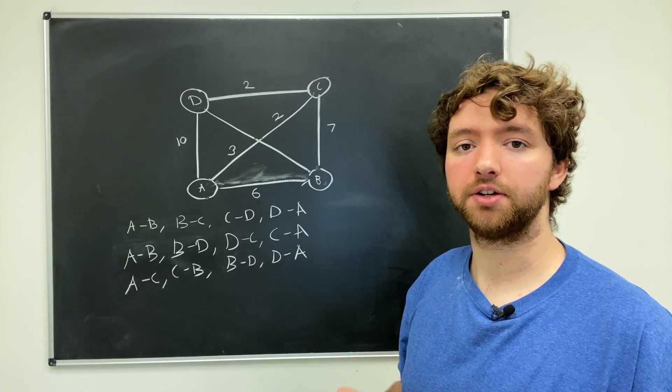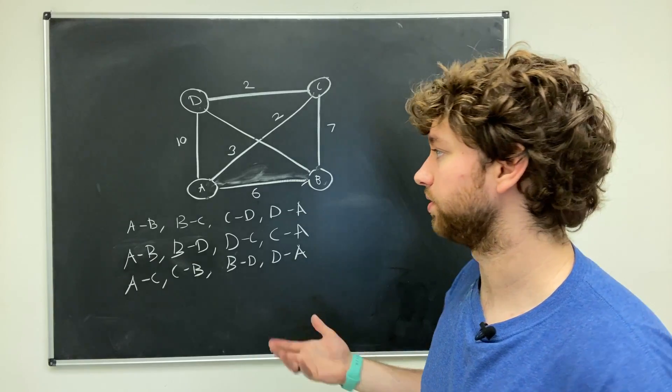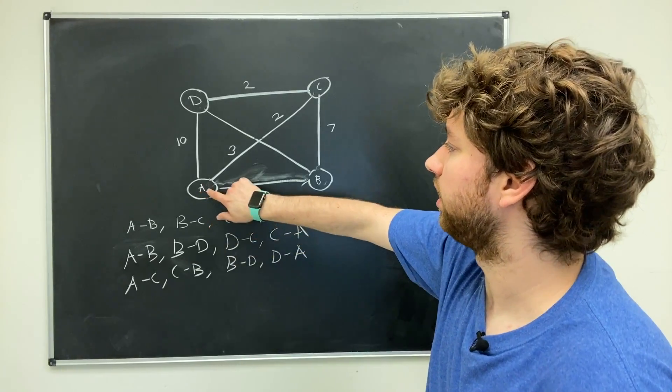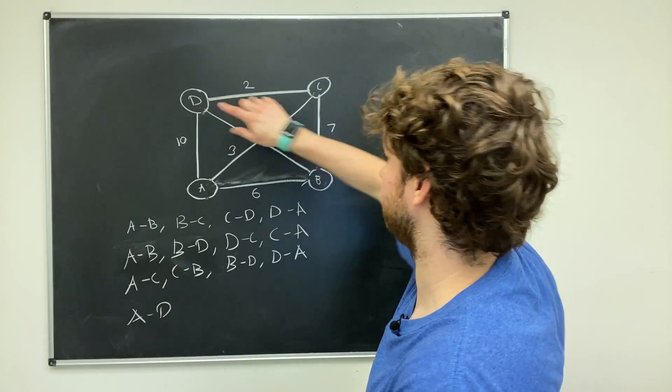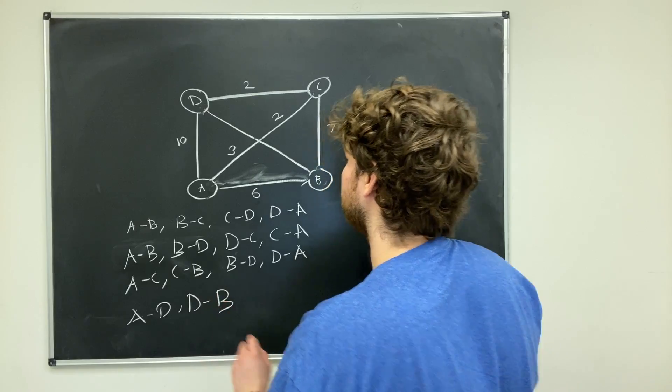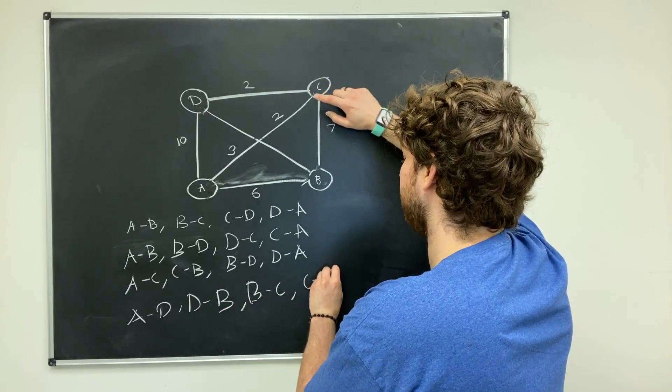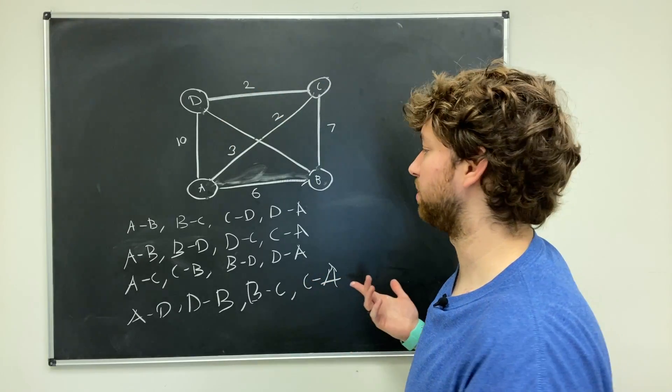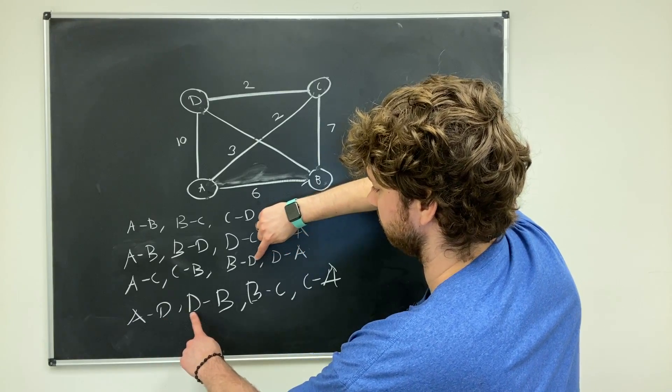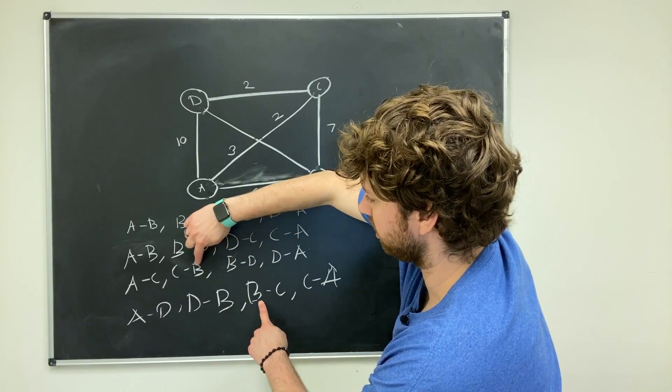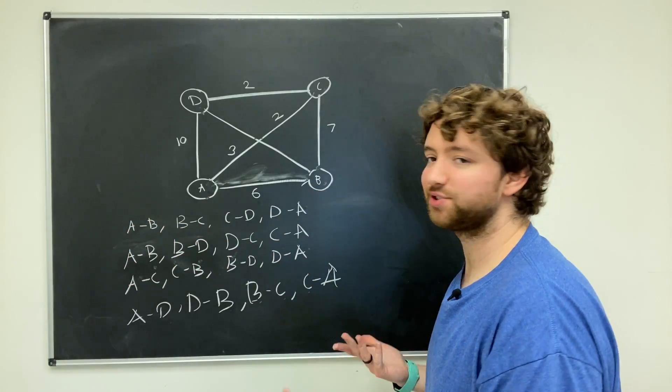This is actually every single path possibility. You could try to think of any others, but it's going to be a repeat of what we just had, or it's going to break one of the rules. So let's just go through an example. If we had A to D, and then D to B, and then B to C, and then C to A. Well, this is actually just a repeat of what we had just in a different order. And you can see that here. A, D, D, B, B, C, C, A. It's kind of hard to show you guys that there. So this is just a repeat.